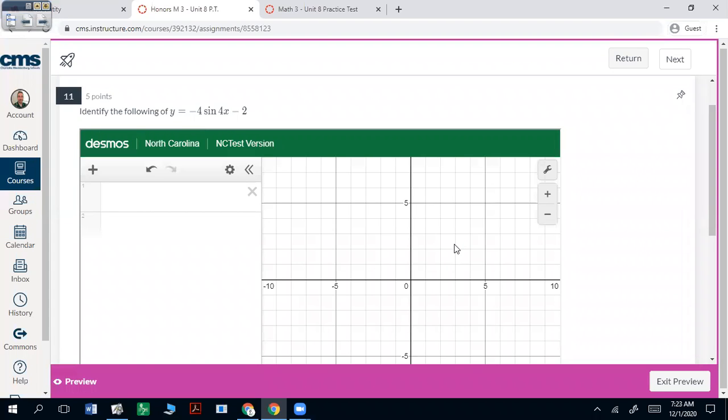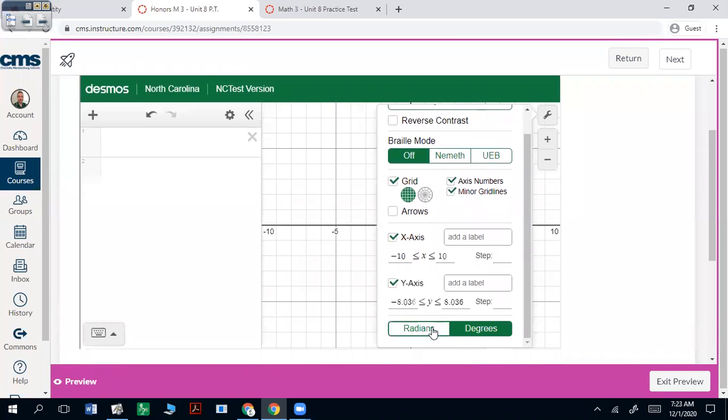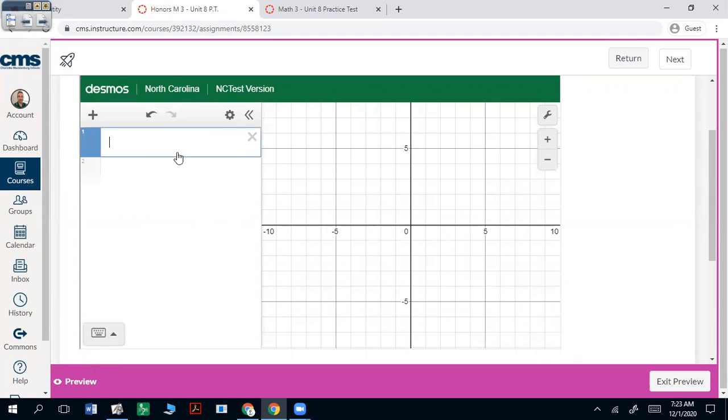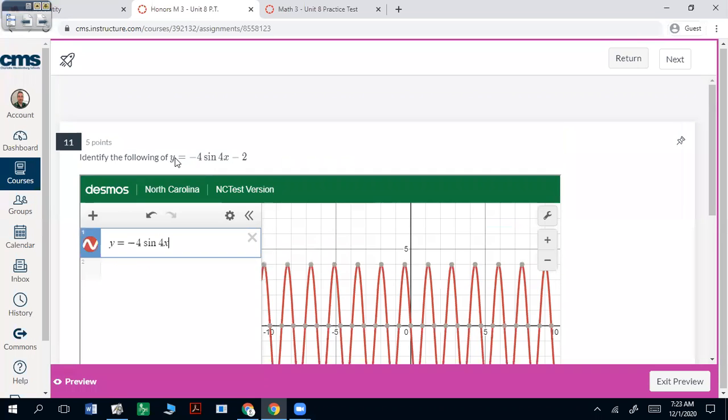All right, number 11, identify the following of y equals negative 4 sine 4x minus 2. We can graph that again. Put that in radians. y equals negative 4 sine 4x minus 2.